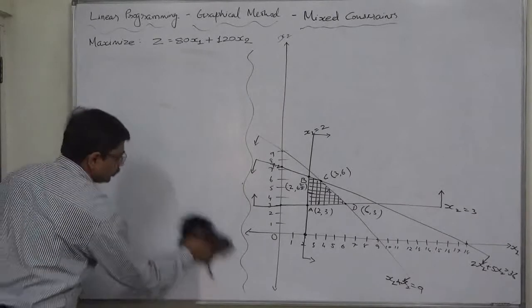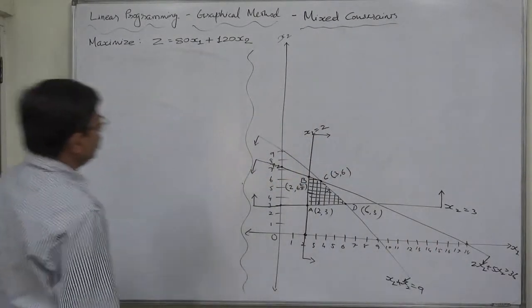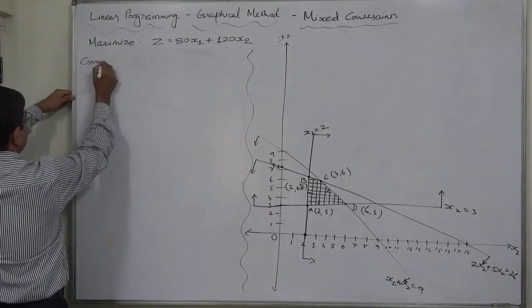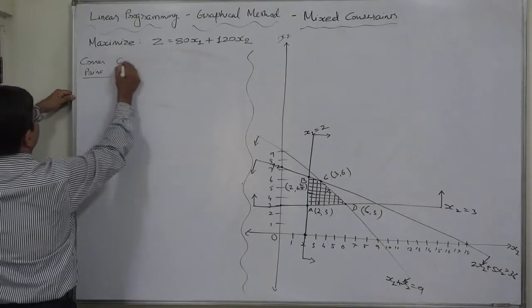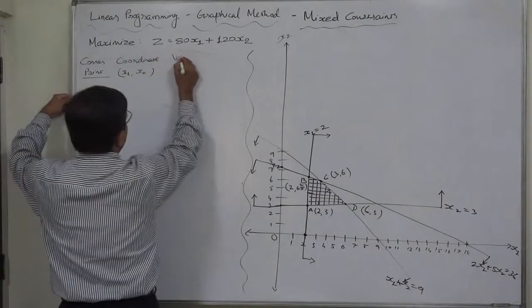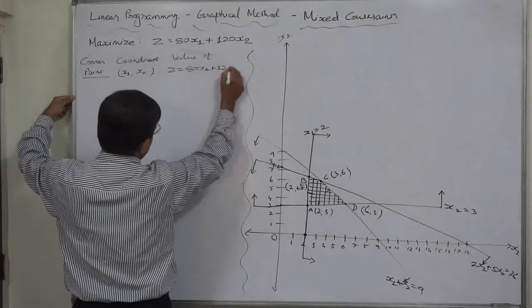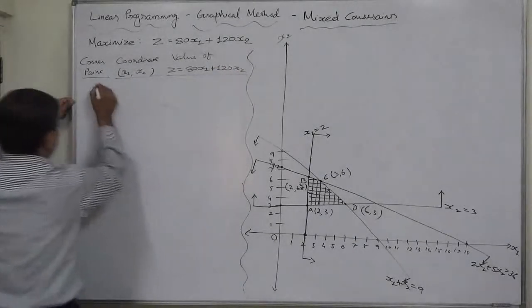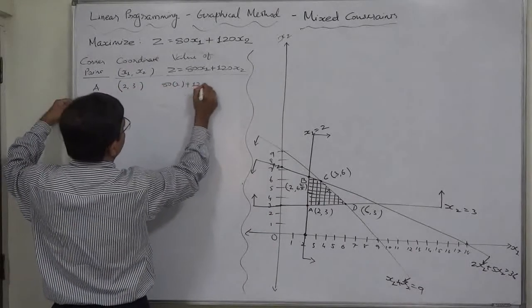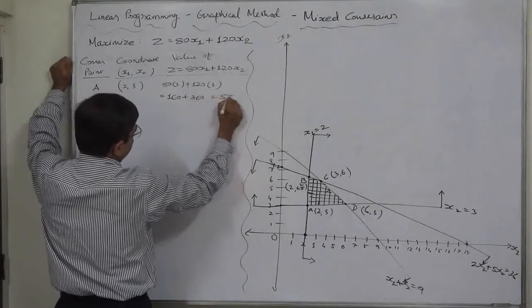We need to substitute the coordinates of the corner points in the objective function and to find the value of the objective function at the corner points. Corner point, coordinates at the corner points, and value of objective function Z equals to 80X1 plus 120X2. Corner point A, 2, 3. 80 into 2 plus 120 into 3, 80 into 2 equals to 160 plus 360, it is 520.